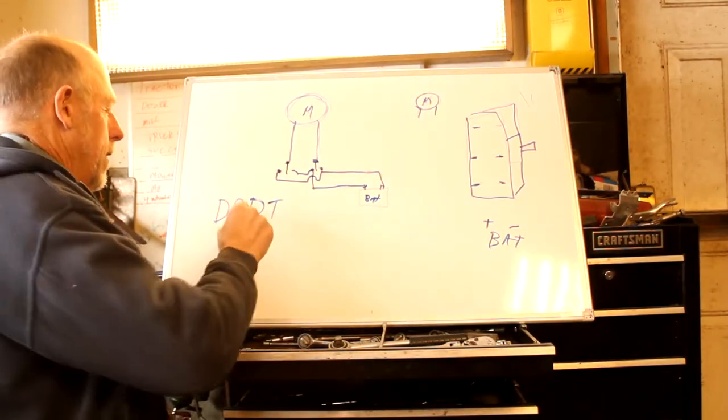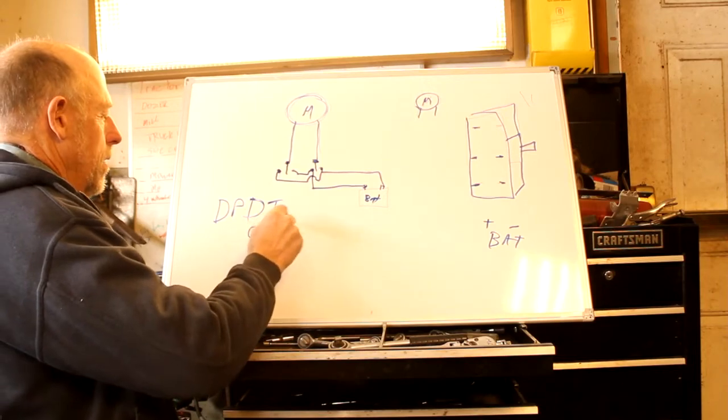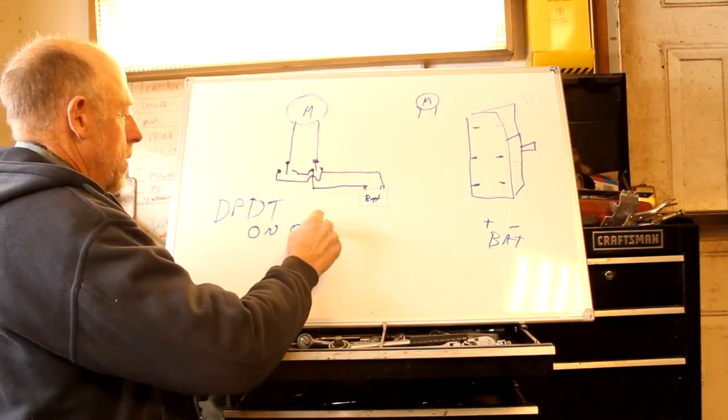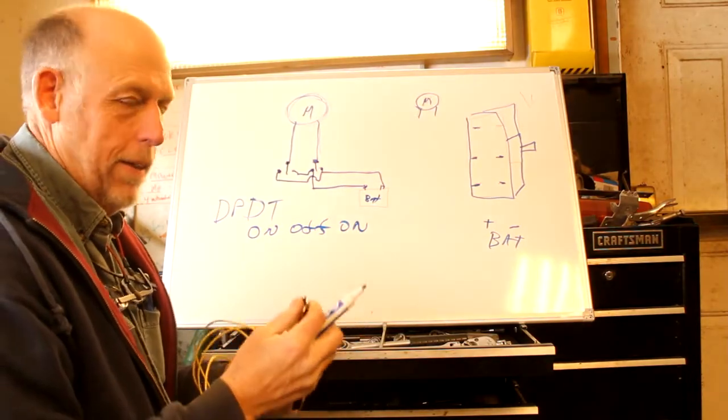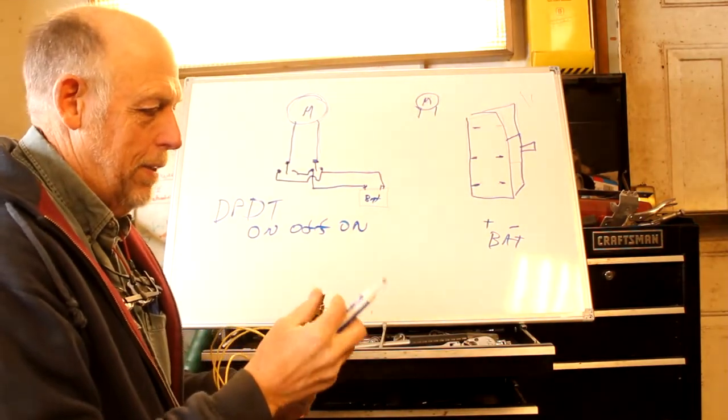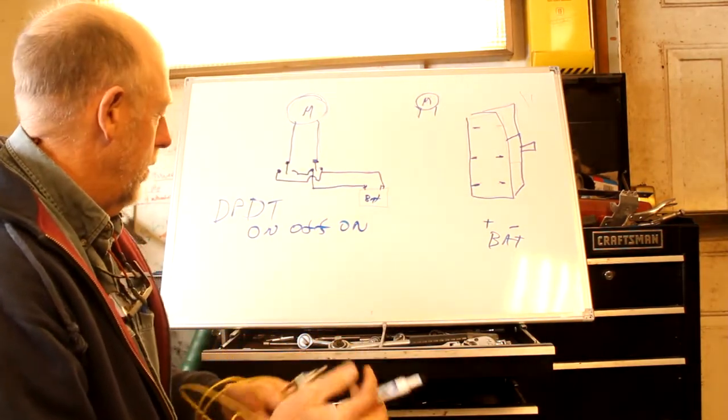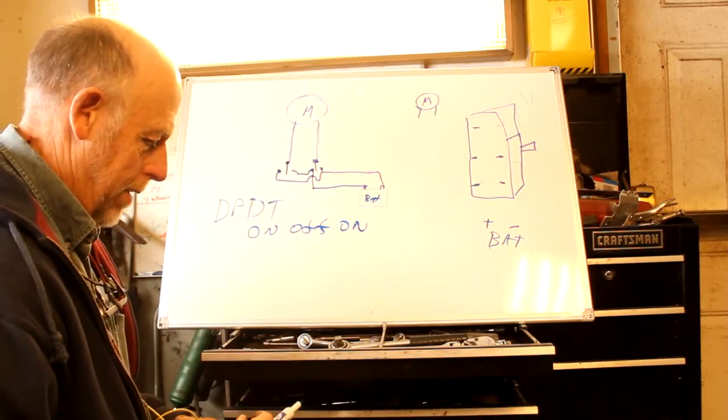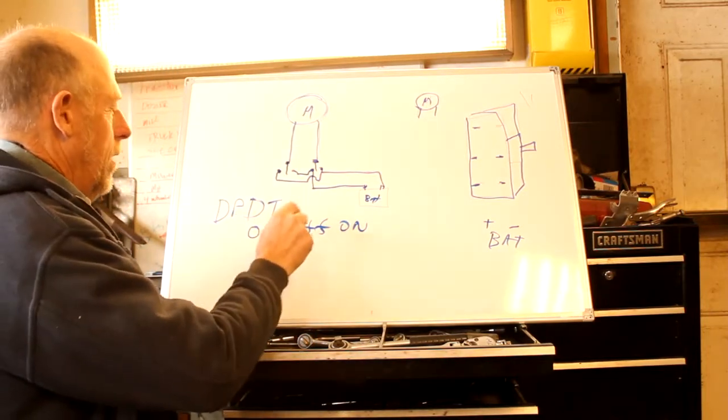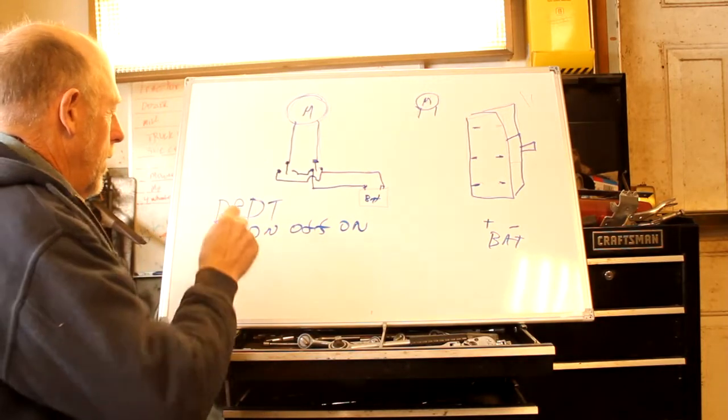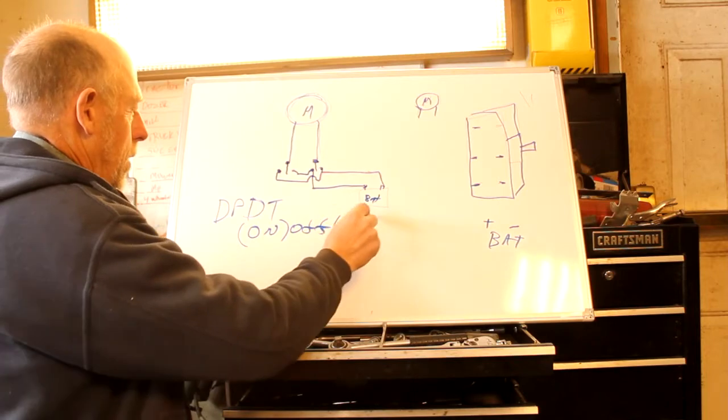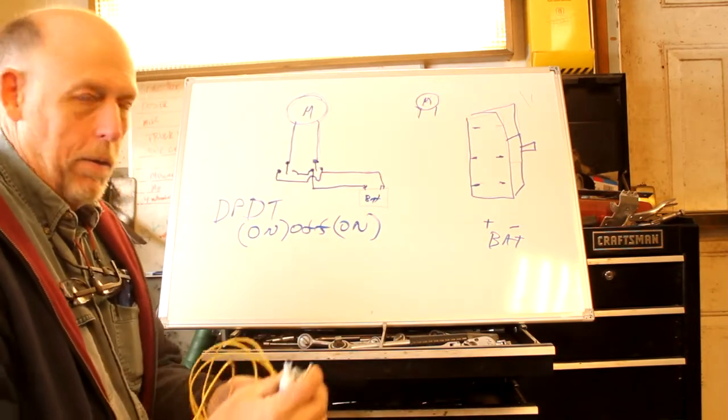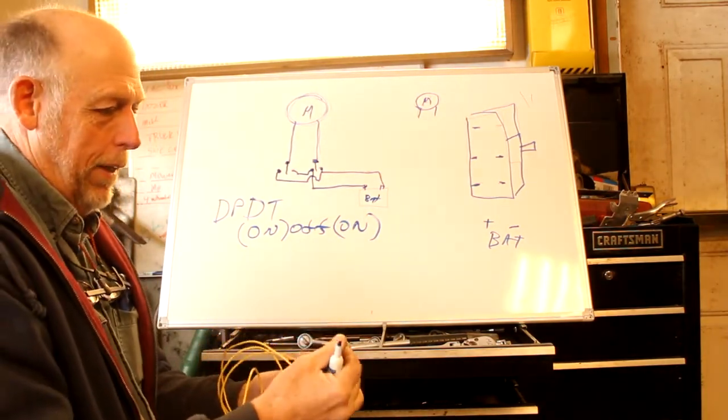And this one is an on-off-on, meaning it's on in one direction, it has a center off position, and it's on in the other direction. You can also have on-momentary-off and on-momentary, meaning that it will jump back to center when you let off.